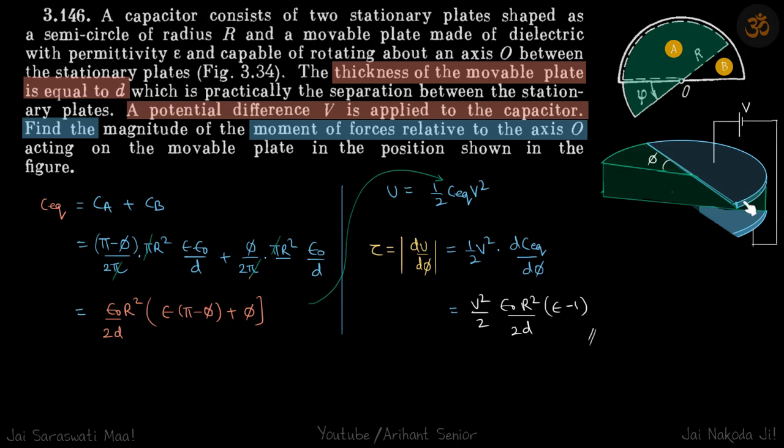We have a capacitor which has two semicircular plates and inside there is a dielectric which can be rotated. At a moment when the dielectric is at an angle φ, we need to find what is the torque on this dielectric.